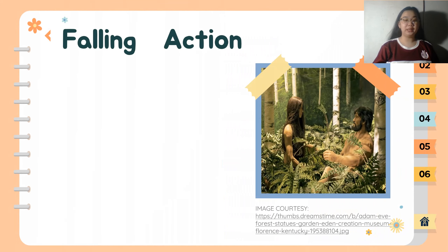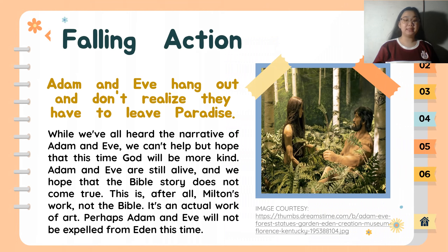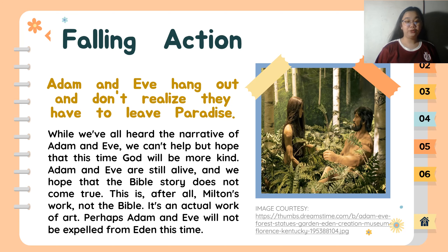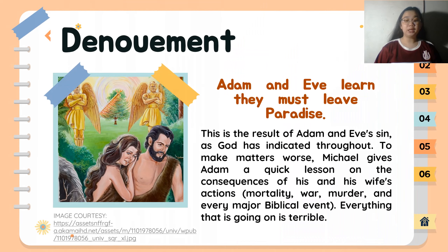In the falling action, Adam and Eve linger and don't yet realize they have to leave paradise. Though we know the narrative of Adam and Eve, we can't help but hope that God will be more kind this time. For the denouement, Adam and Eve learn they must leave paradise — the result of their sin, as God has indicated throughout. To make matters worse, Michael gives Adam a sobering lesson on the consequences of his and his wife's actions.